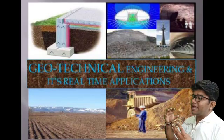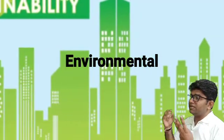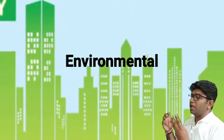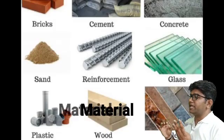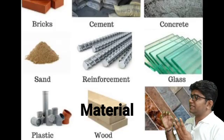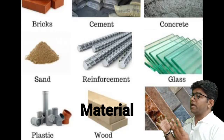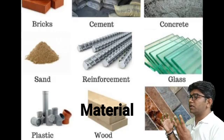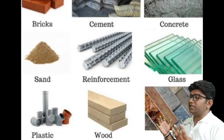The third career scope is environmental engineering, where civil engineers design systems and structures for treatment of chemical, biological and thermal waste. Fourth is material engineering, where civil engineers deal with inspection of existing materials and development of new materials that can be used for construction projects.